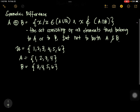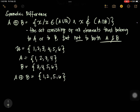Now, what is the symmetric difference of A and B? Okay, who would like to guess? That's correct. The answer is 1, 2, 5, 6. And here is the explanation: you should cancel all the common elements, because not both A and B. So the answer must be elements that are not in both A and B, but in A or B.